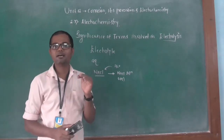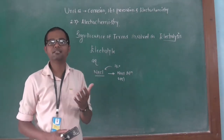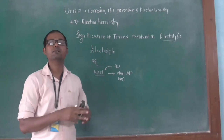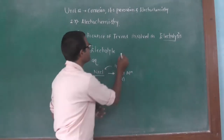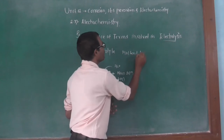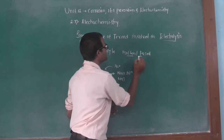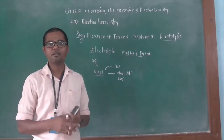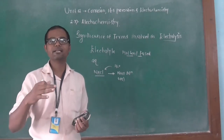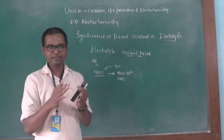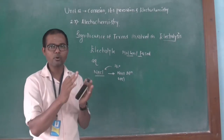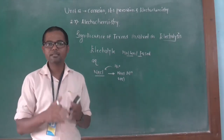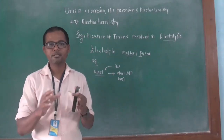The substance which is in aqueous state — that is, aqueous solution where water is used as a solvent — or either in a molten or fused state (meaning that substance is heated to its melting temperature), which liberates ions, is said to be an electrolyte. So a substance either in aqueous state or in molten state which produces ions is said to be an electrolyte.